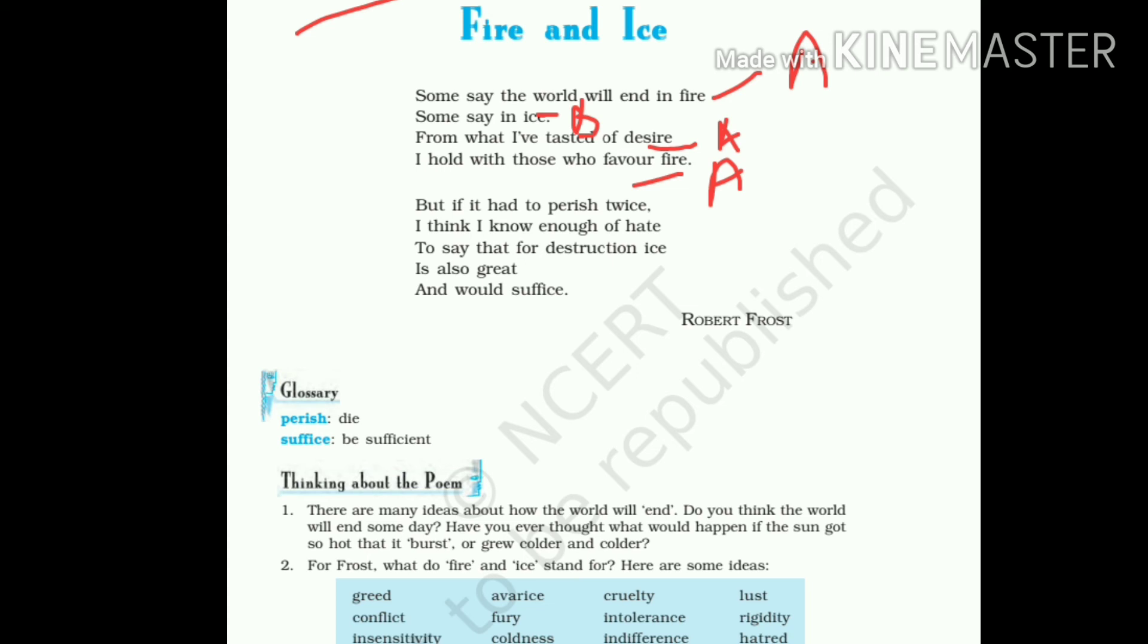Then, twice. Twice rhymes with ice. So let us give it the letter B. Then, hate. Hate sound we have not seen anywhere. So let us give it the letter C. Ice - again, B. Then, great. It is similar to hate. Let us give it C. And, would suffice - similar to ice. So you can see the rhyme scheme now: A, B, A, A, B, C, B, C, B. This is the rhyme scheme of this short poem.